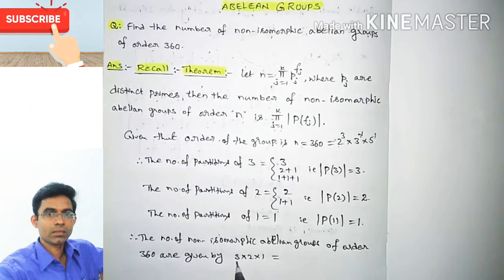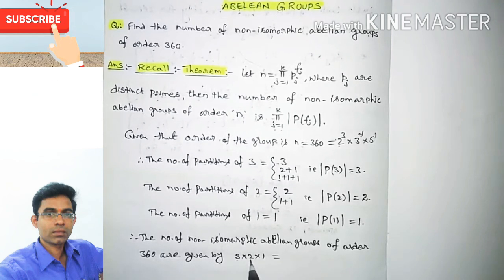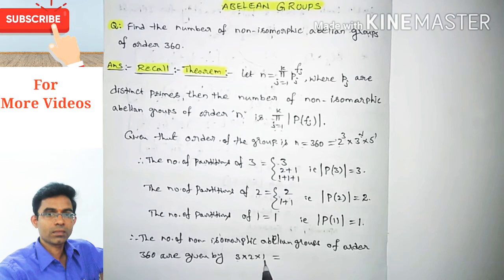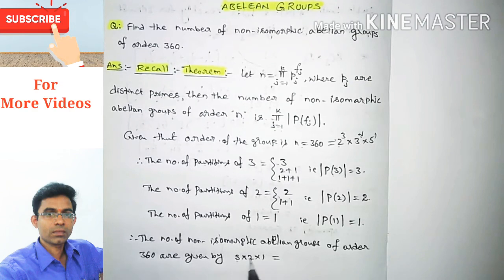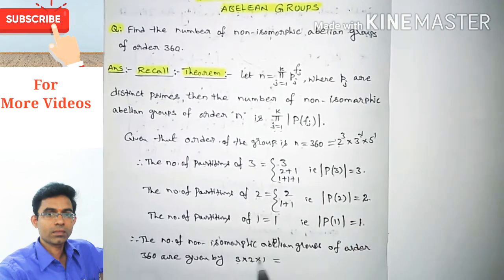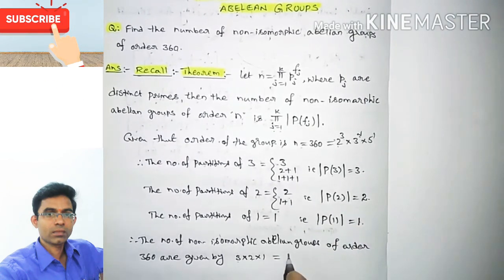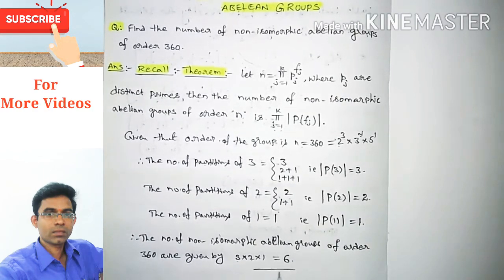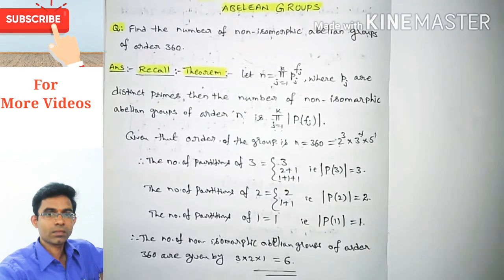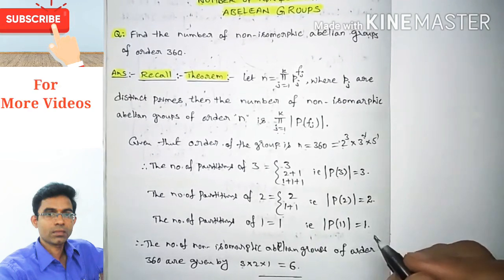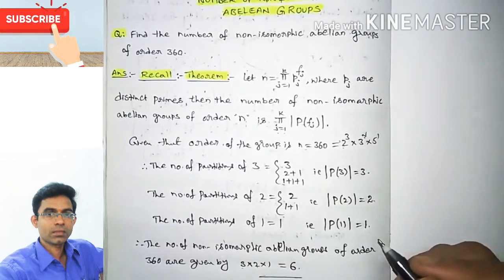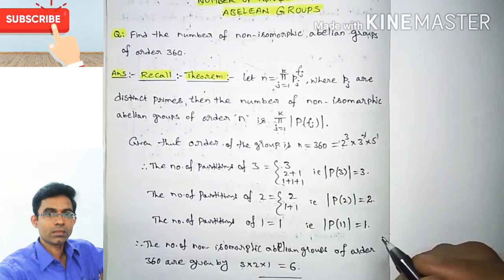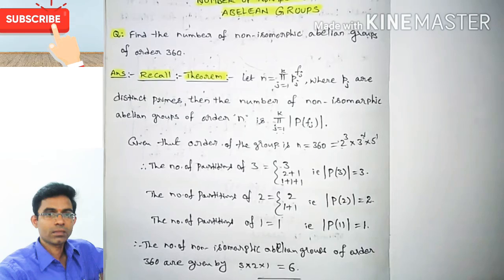So the answer is 3 times 2 times 1 equals 6. The number of non-isomorphic abelian groups of order 360 is 6. I hope you liked this video. If you like the video please share and subscribe. Thanks for watching.